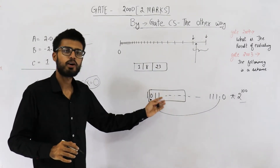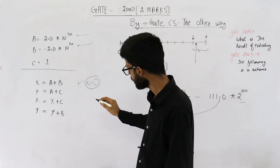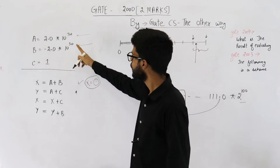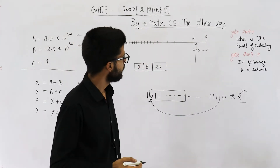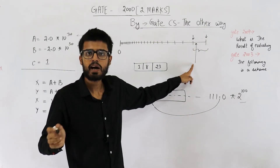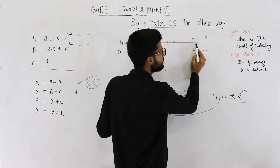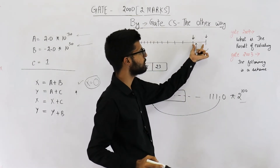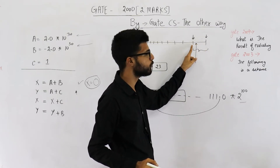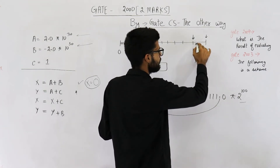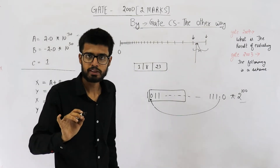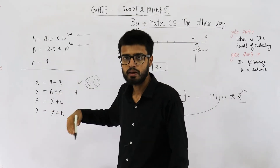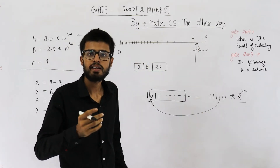Now for the second line — we are adding C, which is 1, to A. This number plus 1: what will be the output? For very big numbers, if you add 1 to it, that number got approximated to a representable value because we can't represent anything between two consecutive representable numbers. This number plus 1 will fall somewhere between them and will also get rounded off to the same number. Which means A plus C results in A only, because C is very, very small compared to A.